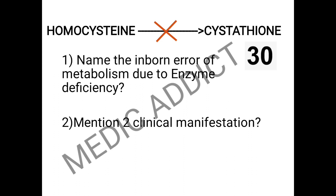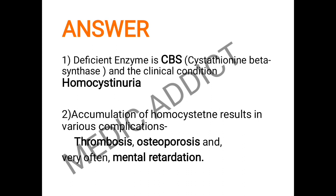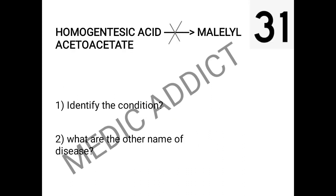The next spot shows a chemical reaction depicting the conversion of homocysteine into its metabolized product cystathionine. We have to name the inborn error of metabolism because the red color signifies that the enzyme is deficient or absent, and we have to give two clinical manifestations. The condition is homocystinuria, and the deficient enzyme is CBS — cystathionine beta synthase. The complications it leads to include thrombosis, osteoporosis, and very often mental retardation.